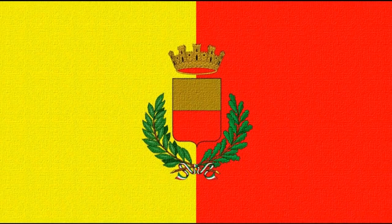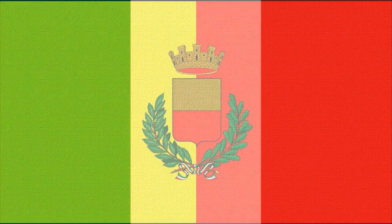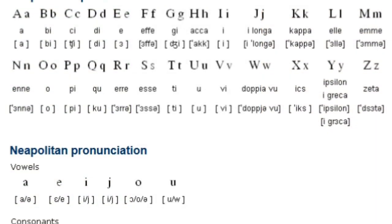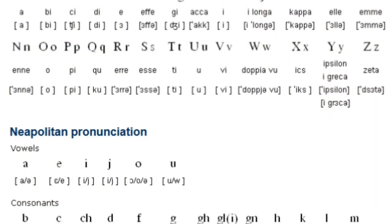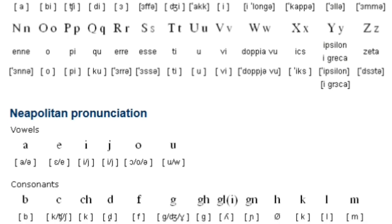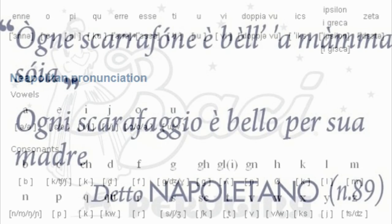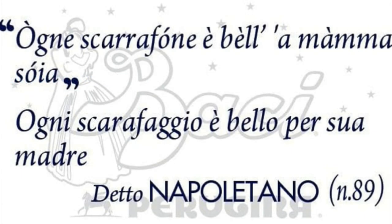In our Napolitano series we are going to be studying the classification of Napolitano: alphabet and pronunciation, vowels, consonants, digraphs and trigraphs, also grammar and vocabulary.